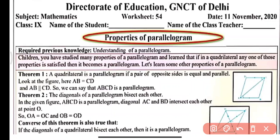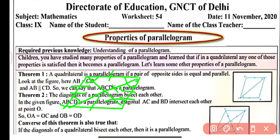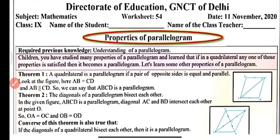We have already learned about the properties of parallelogram in previous classes. A parallelogram is a quadrilateral in which one pair of opposite sides is equal and parallel. Similarly, opposite angles are equal and diagonals bisect each other. These are the basic properties, so required previous knowledge is an understanding of parallelogram.